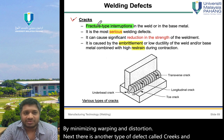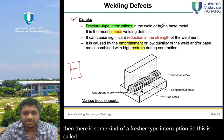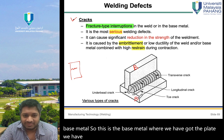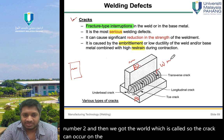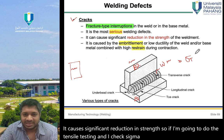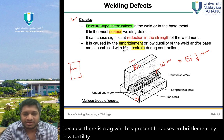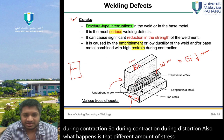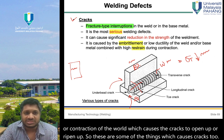Another type of defect is cracks — fracture-type interruptions in the weld or base metal. Cracks cause a significant reduction in strength, reducing the ultimate tensile stress (sigma UTS). They result from low ductility of the weld or base metal combined with high restraint during contraction, which causes the cracks to open up.